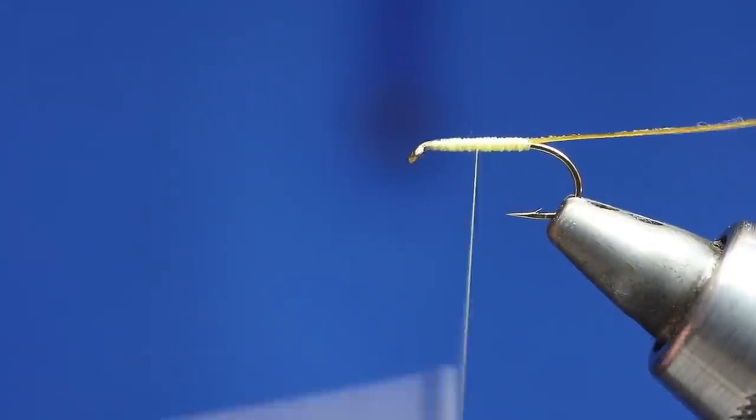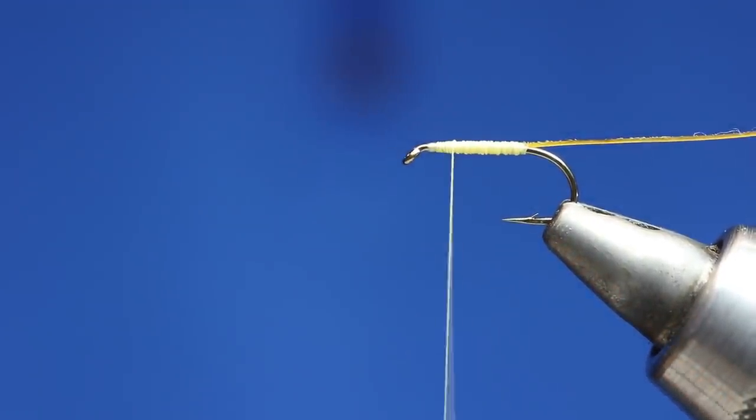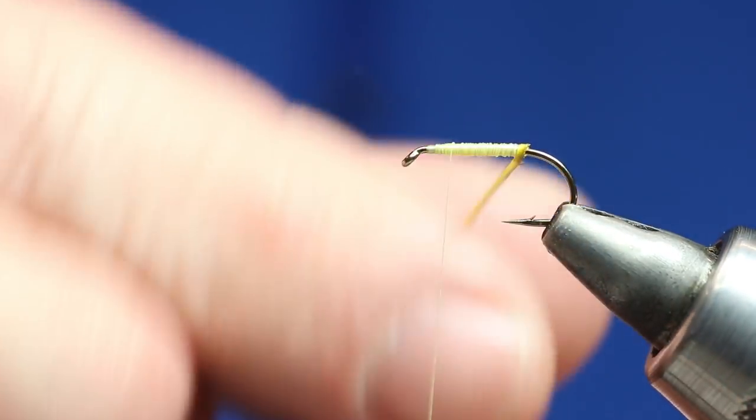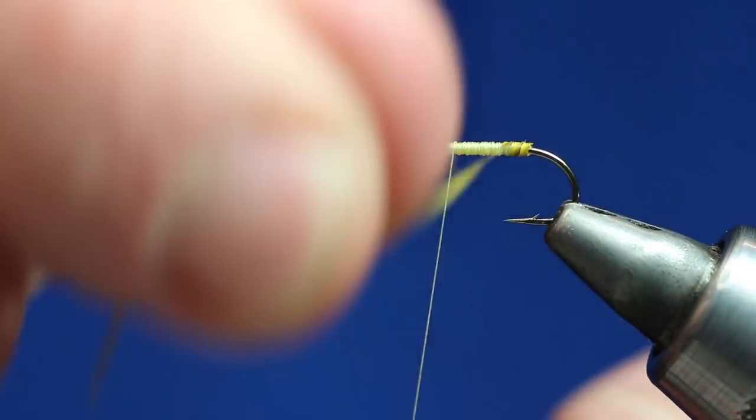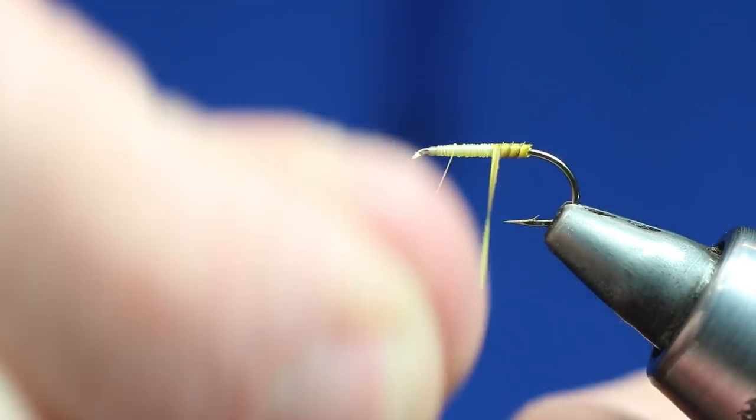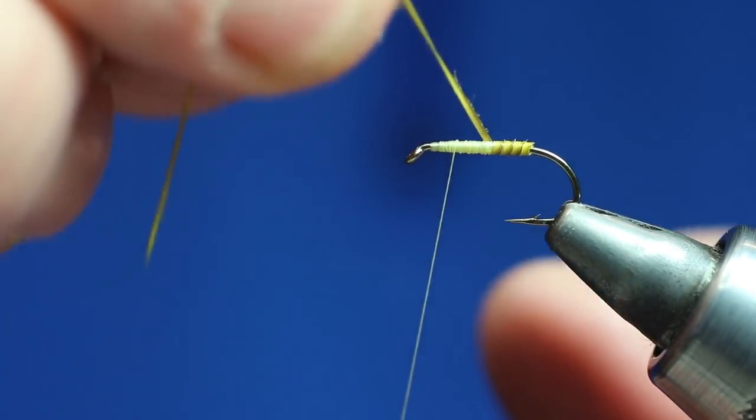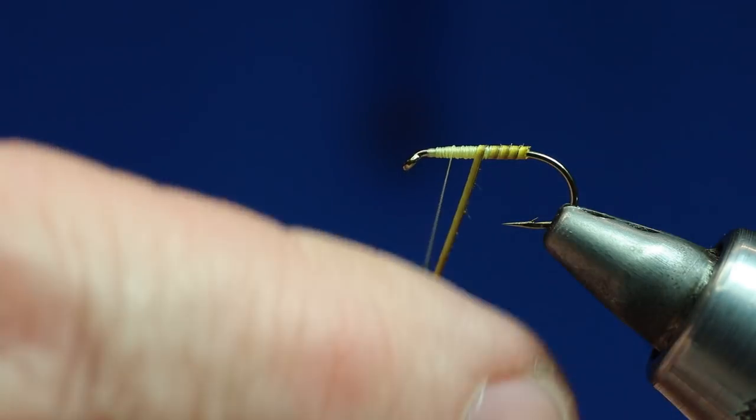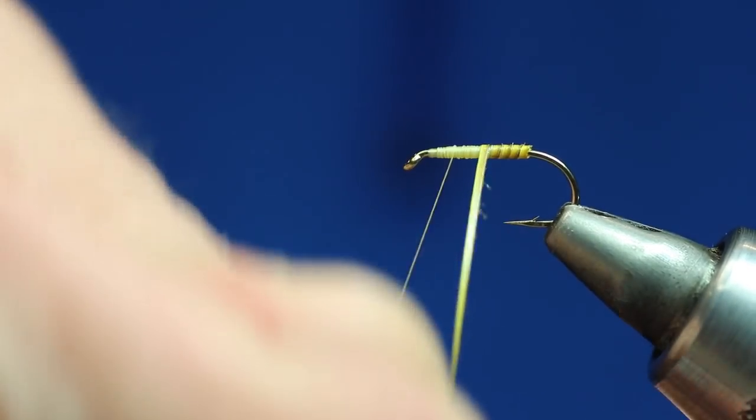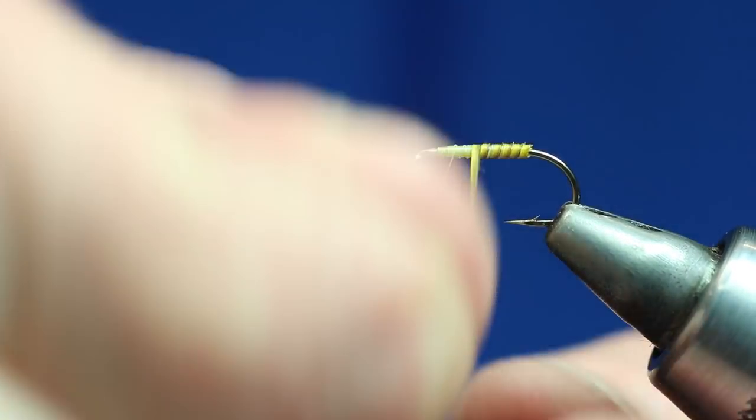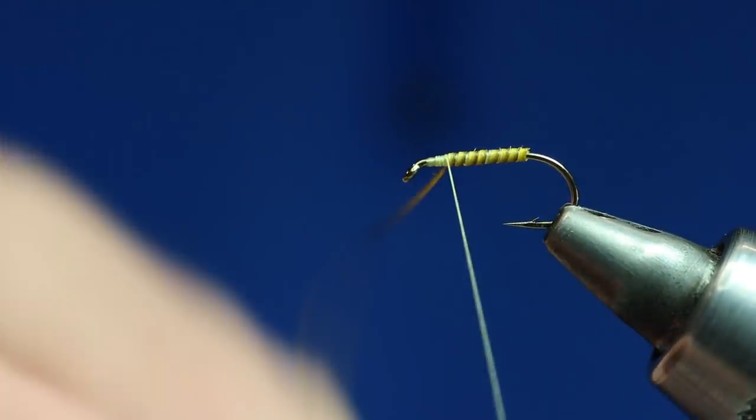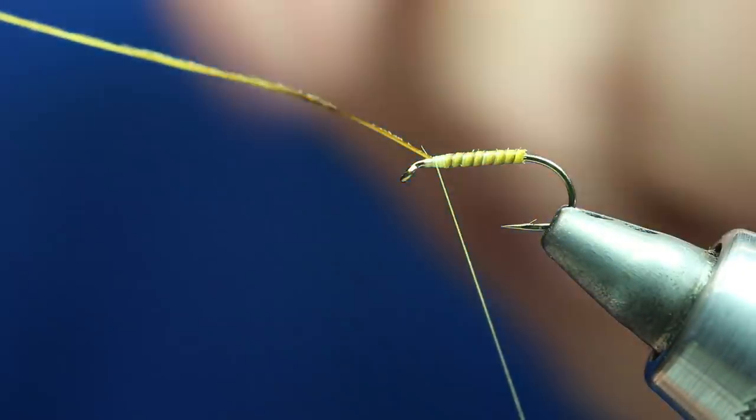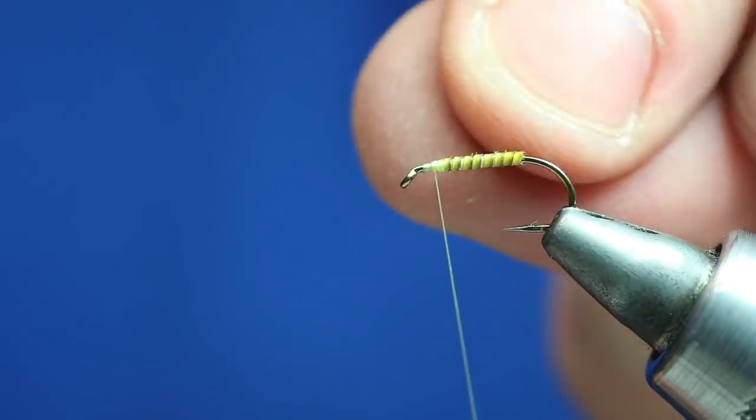Depending on how thick you want the body - if I was tying the shuttlecock version, I would already have the CDC tied in. We're going to take the peacock. I'm not doing touching turns - I want a small gap. There is a gap there, might not look like it. I will overshoot it, so some of this peacock is going to be covered in dubbing.